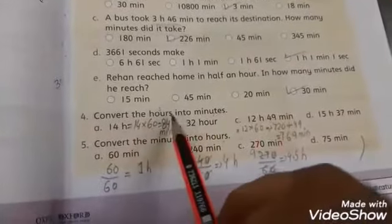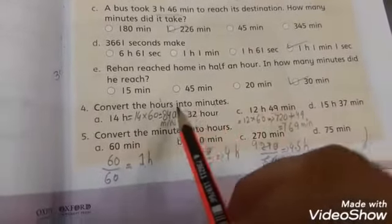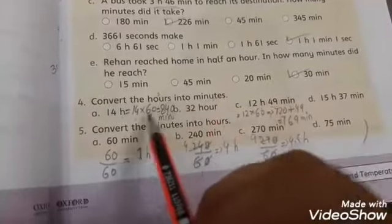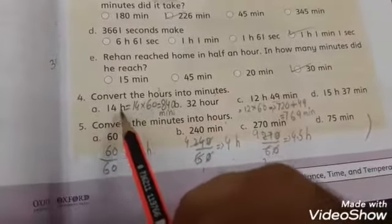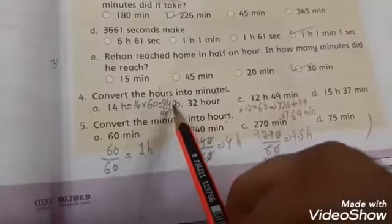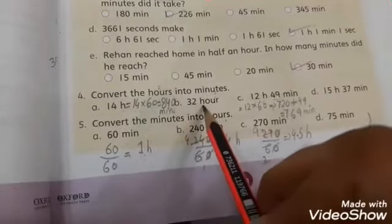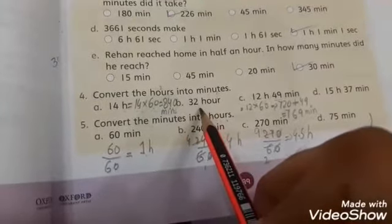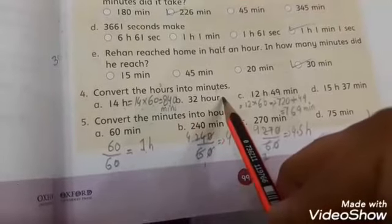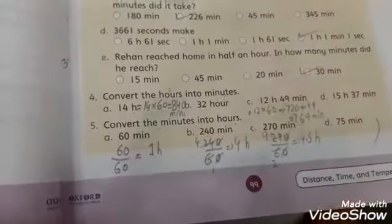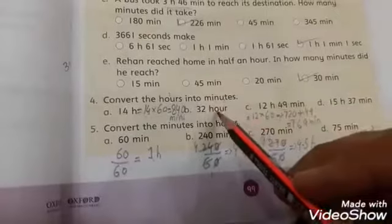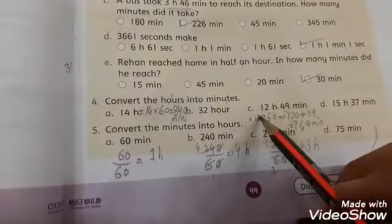Question number 4: convert the hours into minutes. When we convert hours to minutes, we multiply by 60. 14 hours multiply 60 is 840 minutes. Similarly for part B, 32 multiply with 60 gives the answer.